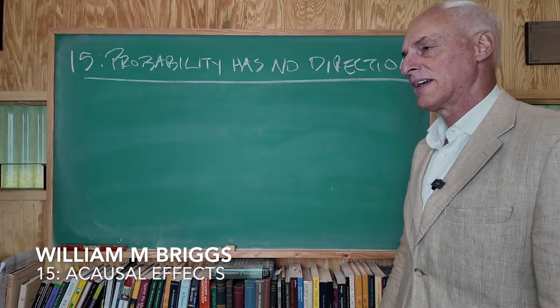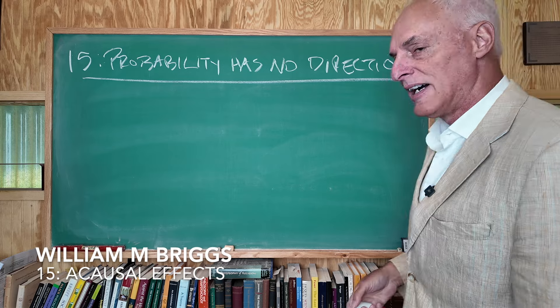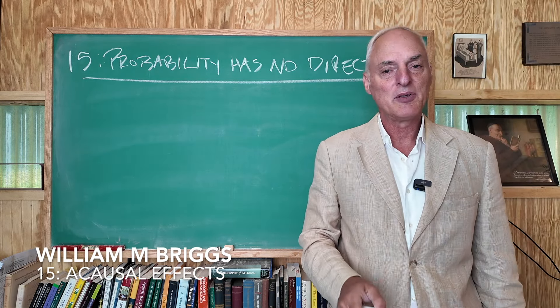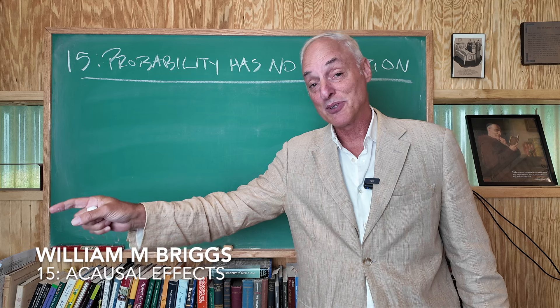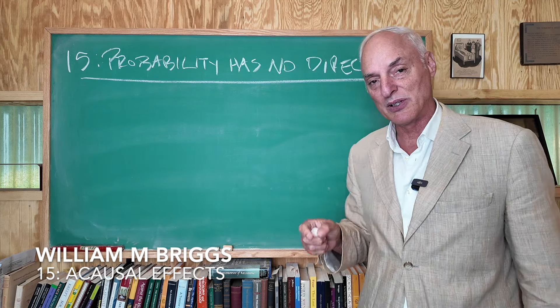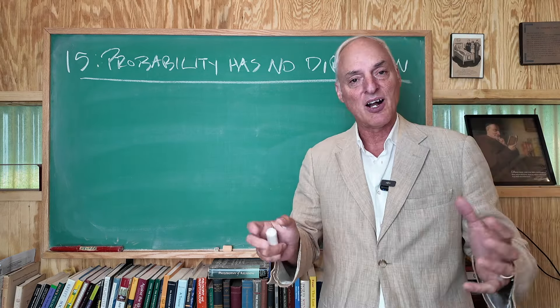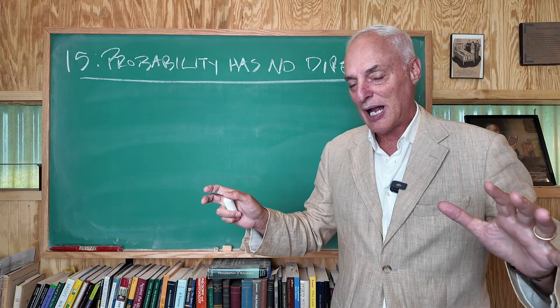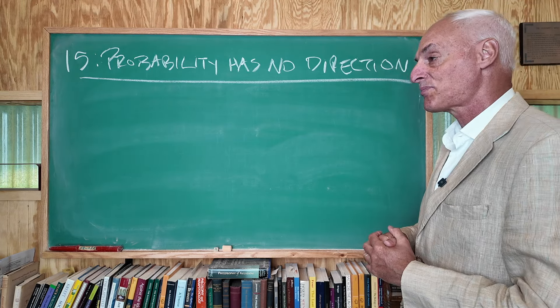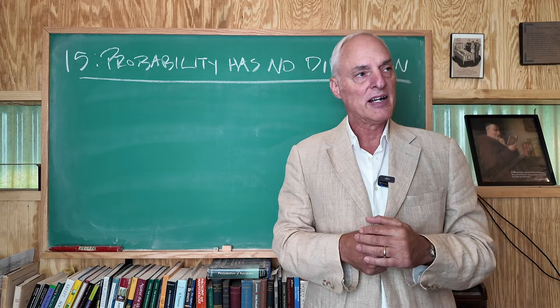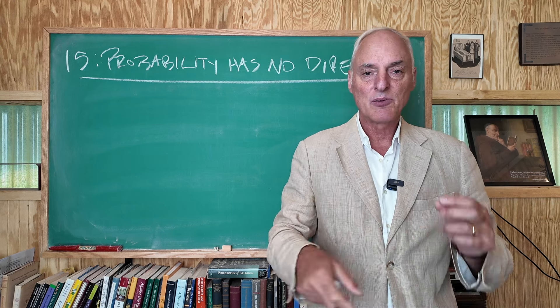Welcome back everybody. This is William Briggs. We're going to continue our class on uncertainty and probability theory, the logic of science. Episode 15. I'm going to prove to you probability has no direction. This is going to be extremely important when I later show you that probability cannot give you cause. We're going to stay in Jaynes for a couple of weeks, and then we'll get back to my book when we talk more about what probability is not.